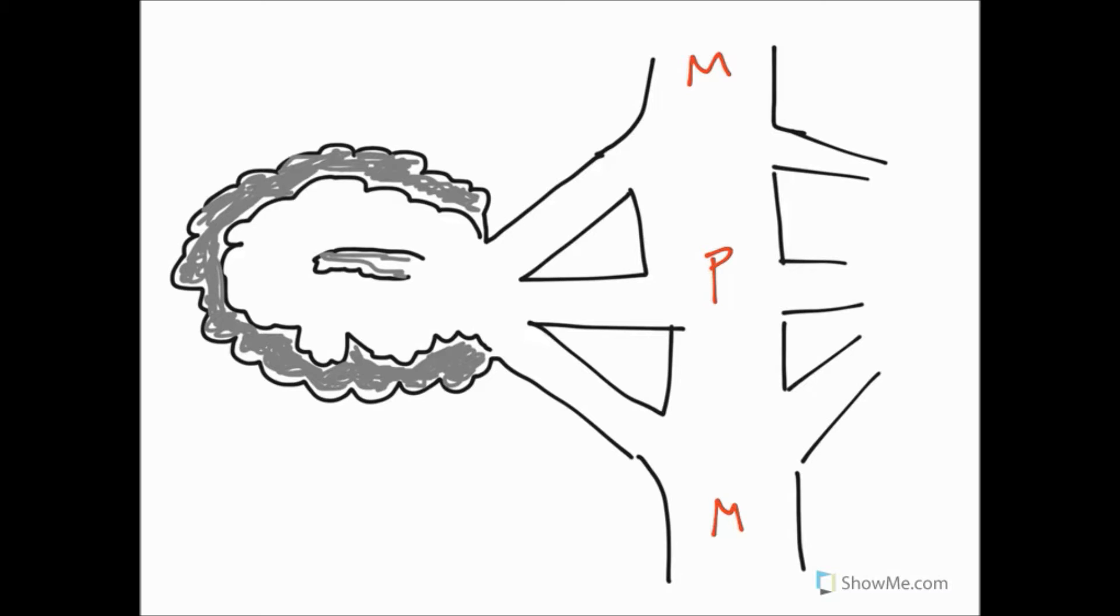Let's first of all consider number one on our list of functions from the first tutorial, and this was equilibrium. Remember that equilibrium was something which was dealt with by the flocculonodular lobe, which is this structure in here. Eventually information that would end up in the flocculonodular lobe would come through the inferior cerebellar peduncle and would eventually make its way to the flocculus.